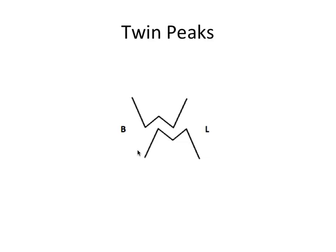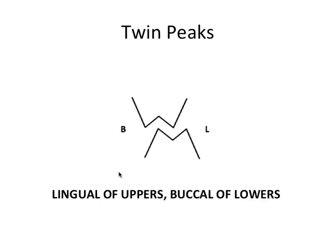We're going to zoom in on the left side, and this is what I call the Twin Peaks drawing. This is our first drawing from the coronal view. You have these zigzags showing the overlapping cusps we just talked about. When you bite down and these teeth come together in ideal occlusion, the lingual cusps of the upper teeth and the buccal cusps of the lower teeth are what contact in this static occlusion scenario. These are called the functioning cusps. I use buccal and facial interchangeably — this is the key thing to lock into your brain for thinking about occlusion.